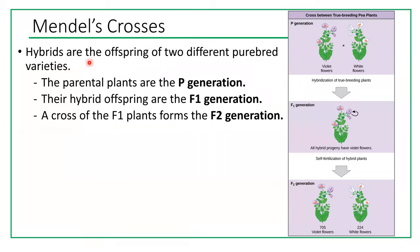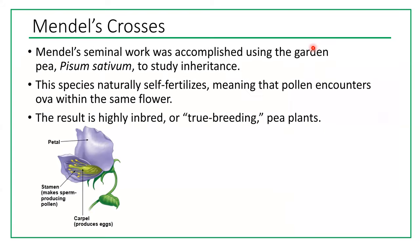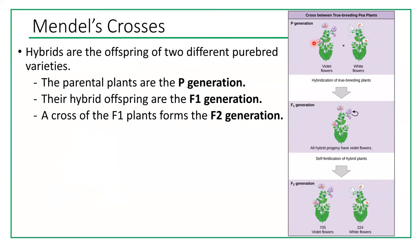Hybrids are the offspring of two different purebred varieties. The parental plants are the P generation, their hybrid offspring are the F1 generation, and a cross of the F1 plants forms the F2 generation. The P generation plants are true-breeding, formed by self-fertilization — they use egg and sperm from the same flower to produce offspring. For example, violet flowers only produced offspring with violet flowers.